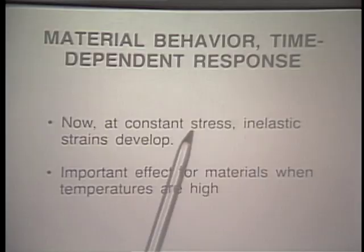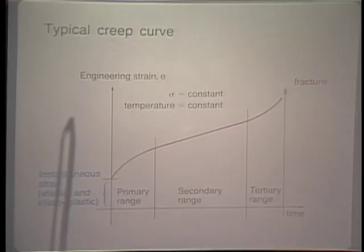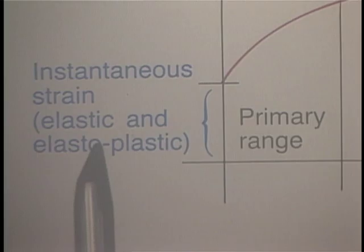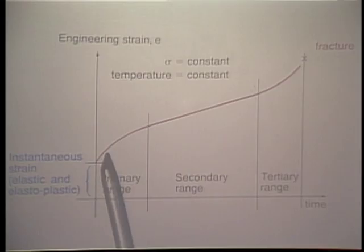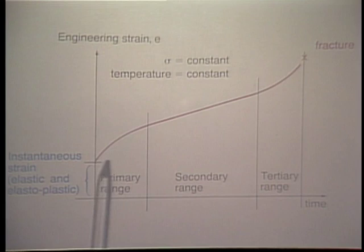Now let's look at time-dependent material behavior — creep — over a very large time. At constant stress, inelastic strains develop, which is particularly important at high temperatures. A typical response curve plots engineering strain vertically versus time horizontally. There is an instantaneous elastoplastic strain, then with time the strain increases along the red curve. We distinguish the primary, secondary, and tertiary creep ranges, until fracture occurs.